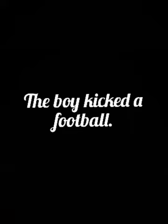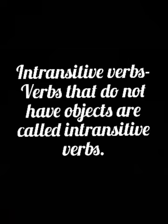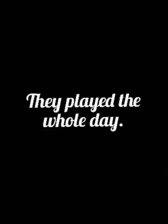Now the next type is intransitive verbs. Verbs that do not have objects are called intransitive verbs — the opposite of transitive verbs. For example, I cried — cried is your verb but you are not using any type of object, so that is an intransitive verb. Another example: they played the whole day — as you are not mentioning any object here, that becomes your intransitive verb.